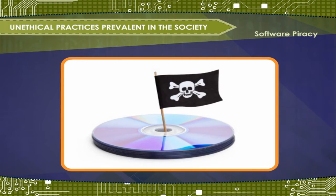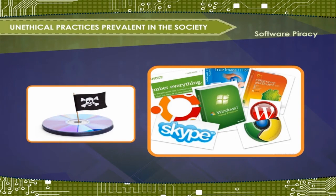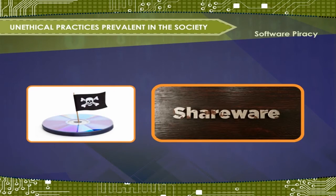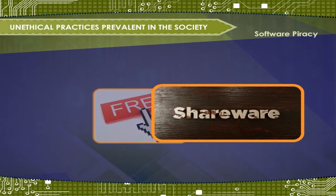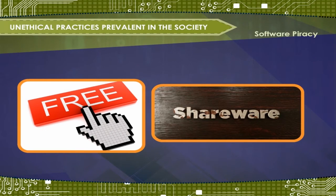Software piracy applies mainly to full-function commercial software. The time-limited or function-restricted versions of commercial software called shareware are less likely to be pirated since they are freely available. Similarly, freeware, a type of software that is copyrighted but freely distributed at no charge, also offers little incentive for piracy.